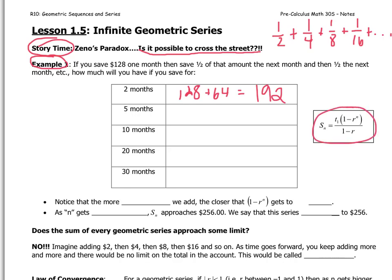Why don't you use the summation formula and figure out how much you will have saved after five months, 10 months, 20 months, and 30 months. I'll pause the video now and let you fill it in.